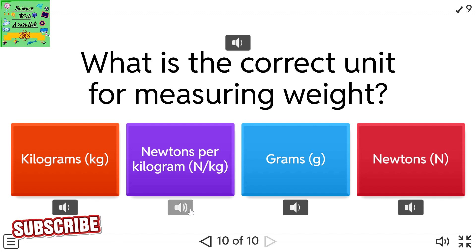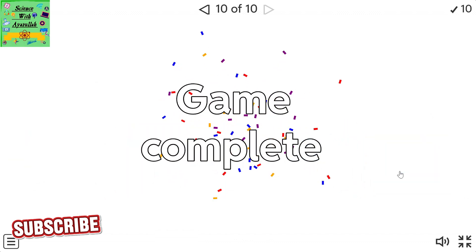What is the correct unit for measuring weight? Kilograms. Newtons per kilogram. Grams. Newtons.